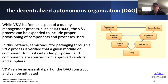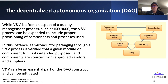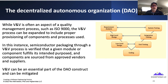V&V is involved with quality processes — ISO 9000, ISO 27001, and other aspects as well. In our case study, the semiconductor package through a V&V process is verified that a given module or component — hardware and software — fulfills its intended purpose. Components are sourced from approved vendors; the DOD has certain standards — you can't purchase hardware or software through vendors that are known adversaries. V&V can be an essential part of the DAO construct and can be mitigated as such. Think about the agreements formed in the blockchain environment: verification and validation can and should be part of that contract.